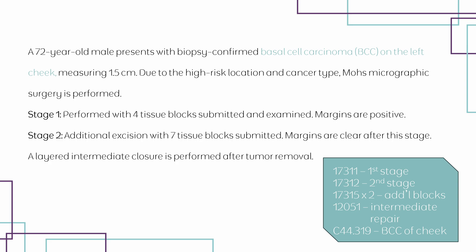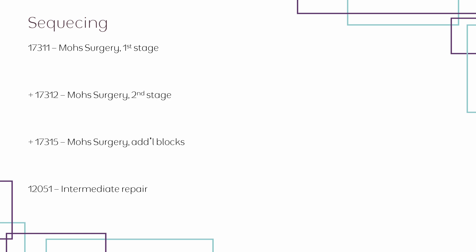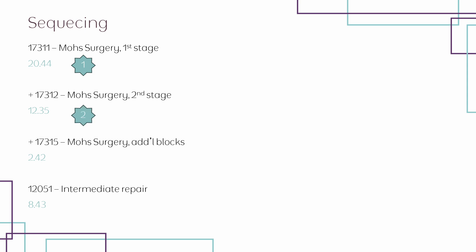Now that we have all our codes, we need to address sequencing and modifiers. Per CPT guidelines, sequencing is based on RVU — relative value units assigned by CMS. The RVUs are: 17311 at 20.44, 17312 at 12.35, 17315 at 2.42, and 12051 at 8.43. The correct order is: 17311 first, 17312 second, 12051 third, and 17315 last.